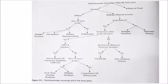In summary: radiolucencies occurring within the bony jaws are classified as general or solitary. If diffuse, think multiple myeloma, osteoporosis, and primary hyperparathyroidism for patients over 40 years; thalassemia for patients below 40. If ill-defined multiple discrete lesions, think multiple myeloma or metastatic disease.